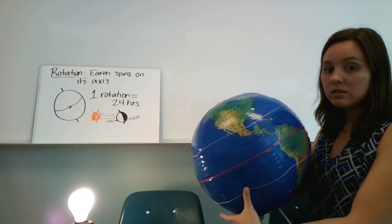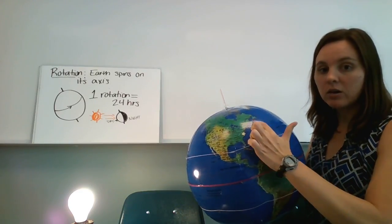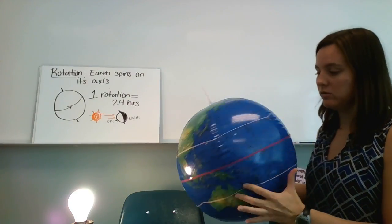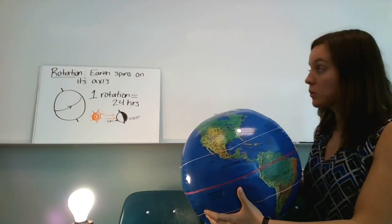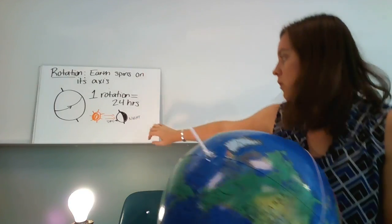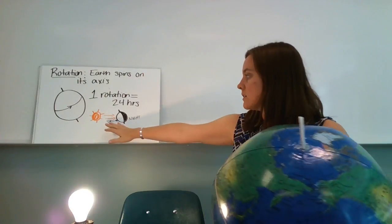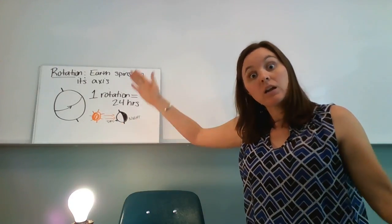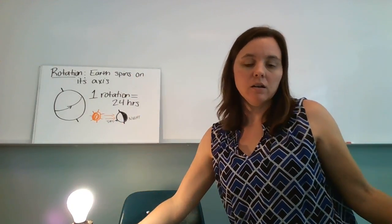One full rotation. So for North Carolina, go from here all the way around to here. Takes 24 hours and that gives us one day and one night. So remember when we're facing the sun, it's day. When we're not facing the sun, it's night. Go figure. All right. Next.